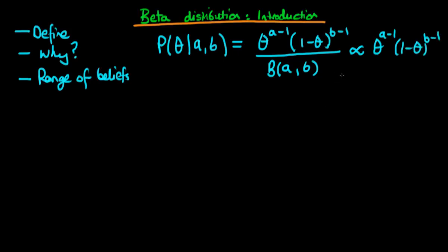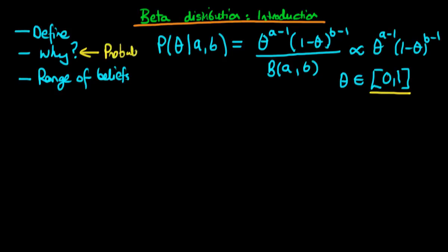This distribution is only defined for theta lying in the range zero to one. So why might we choose to use the beta distribution to specify prior knowledge about a parameter theta? One reason is that this distribution is only defined for theta in the range zero to one, making it a very natural distribution to use when talking about probabilities and specifying prior knowledge about the probability of something occurring. We'll also see that we can specify quite a large range of beliefs by changing parameters a and b.